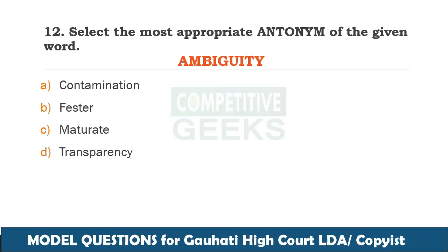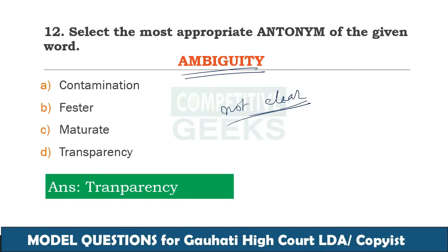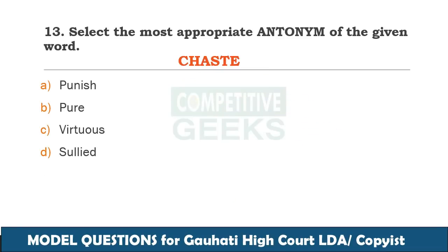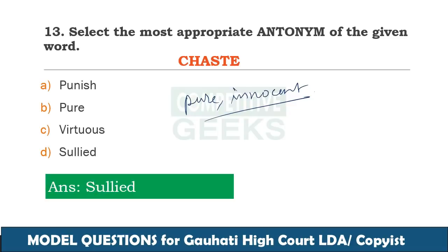The next word is ambiguity — not having an obvious meaning. Next, chaste. Chaste means pure and innocent. The opposite meaning is soiled. Soiled means to damage the purity of someone, immoral. The antonym of chaste is soiled.